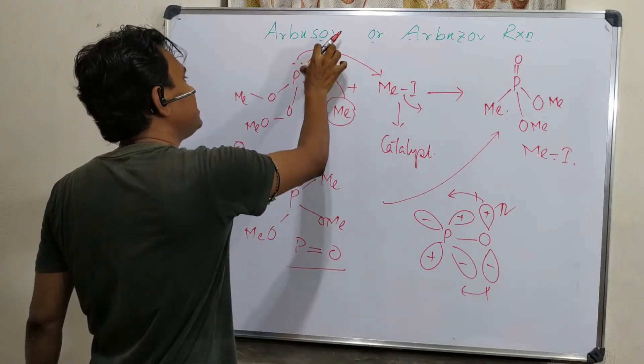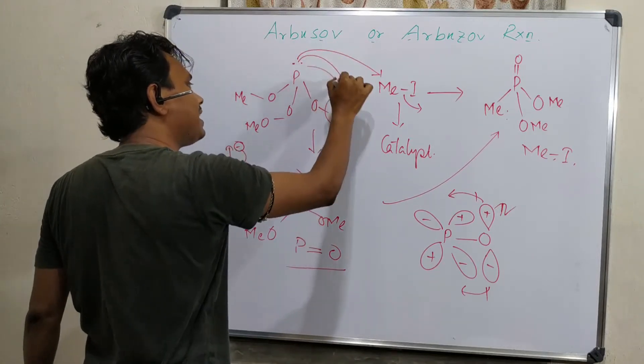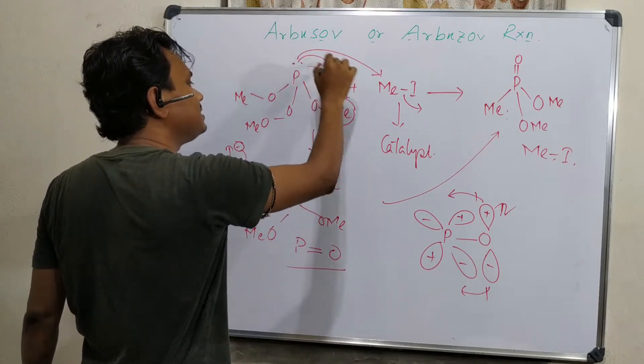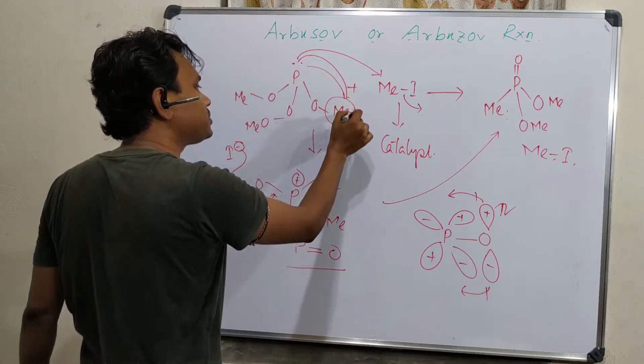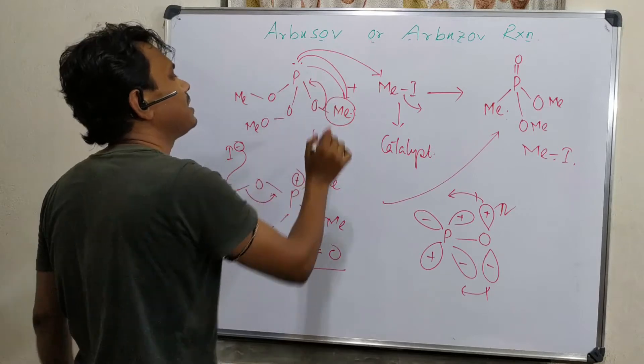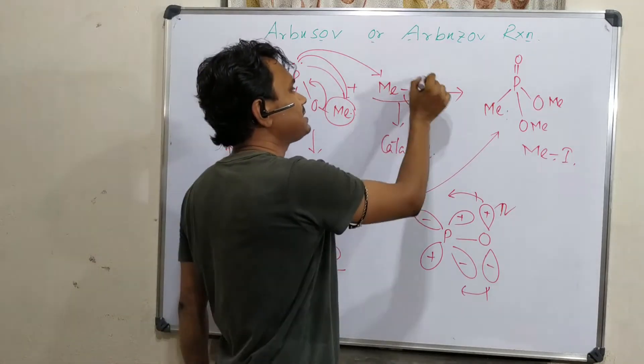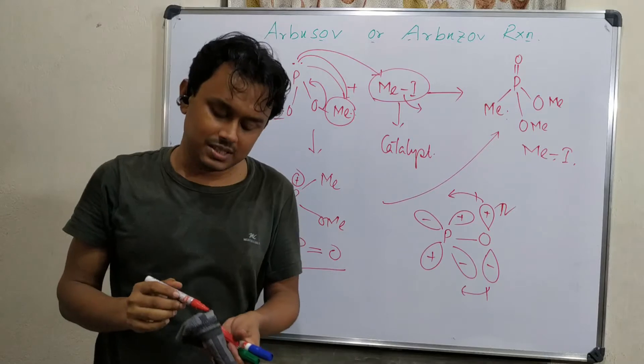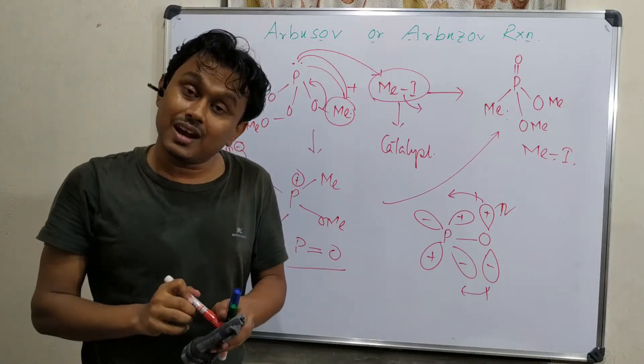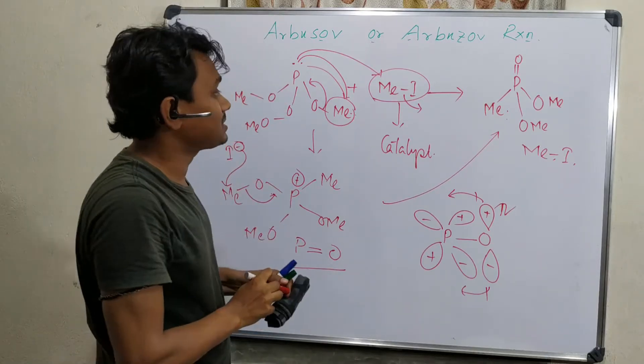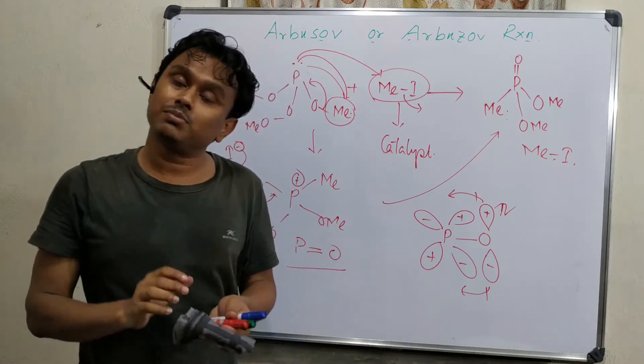You can say in that way methyl iodide is a catalyst such that this lone pair is capturing this methyl and this is done. Here this is acting as a catalyst. Generally, we see methyl iodide as a reagent. It is rarely seen that methyl iodide is acting as a catalyst, so this reaction gives an example of it as a catalyst.